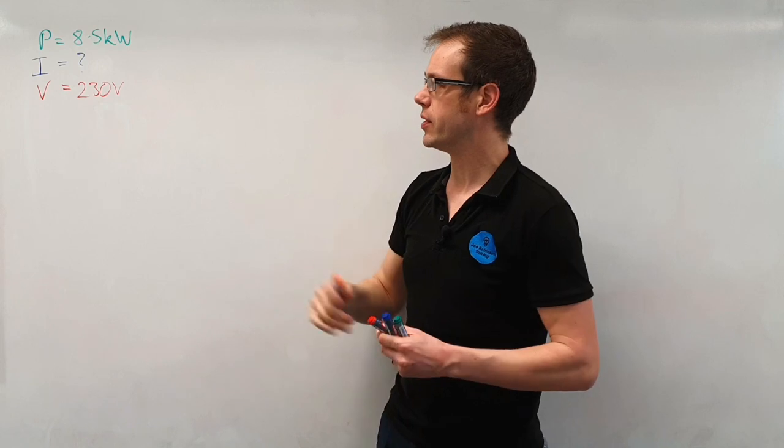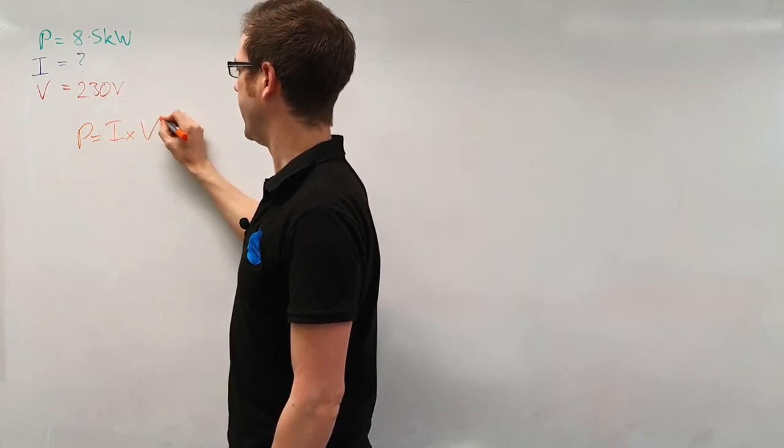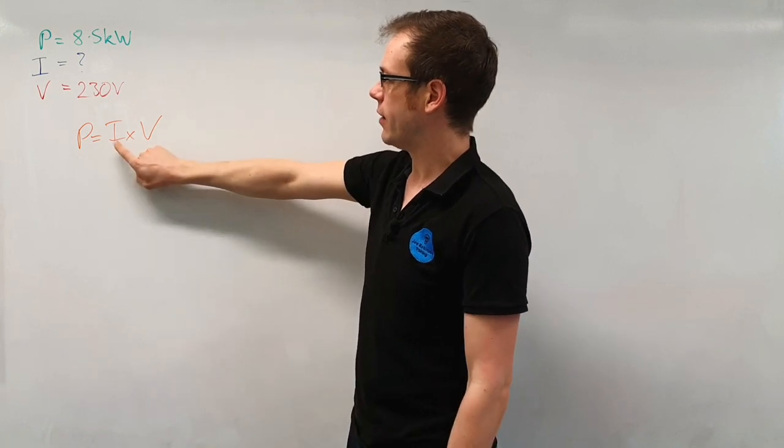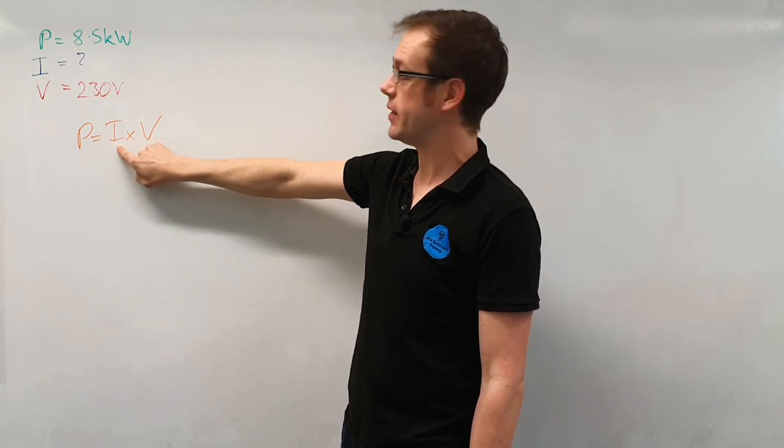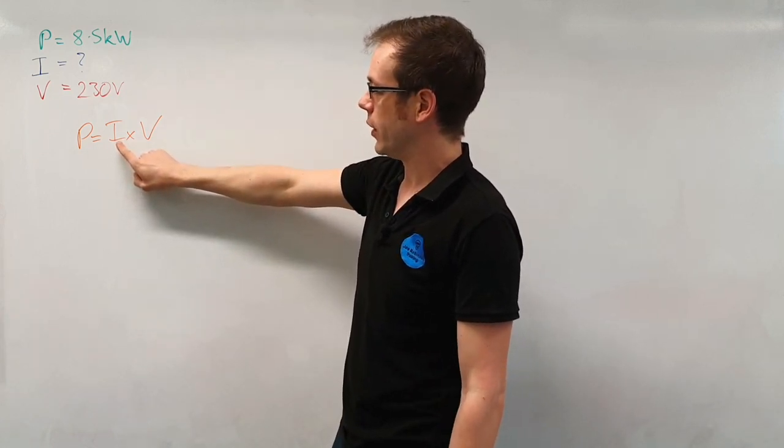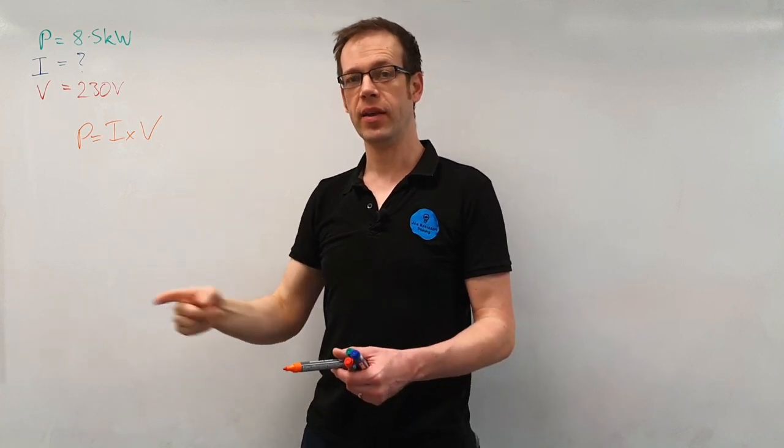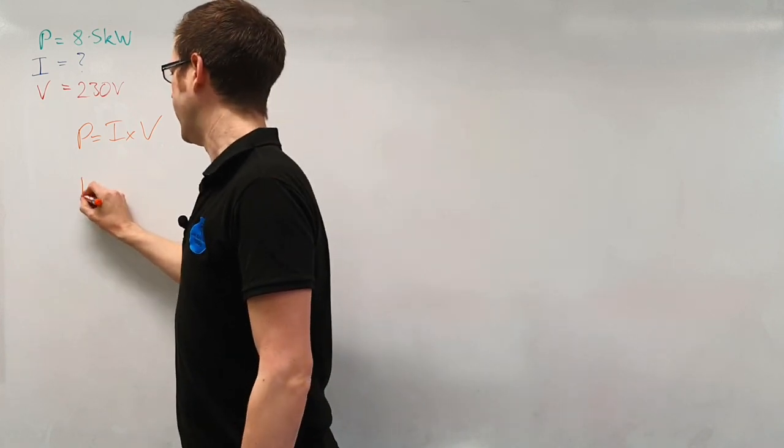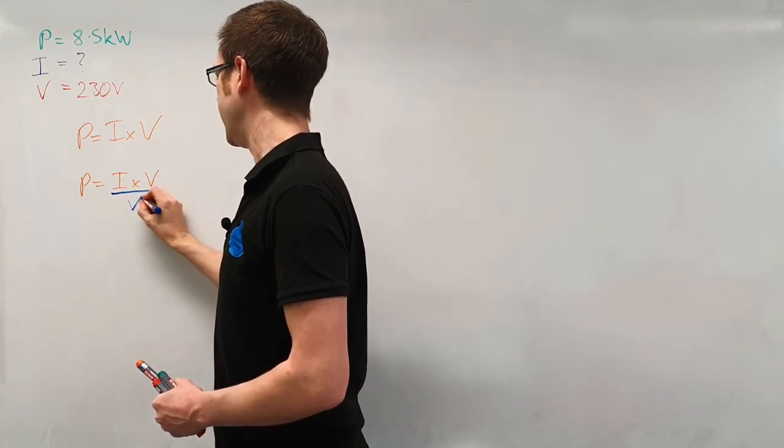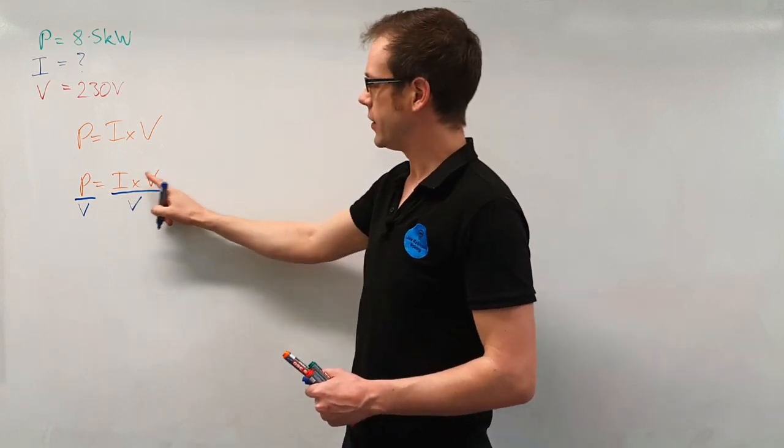So let's figure out how we're going to change this formula around to find the current. We start off from our formula P is equal to I times by V, we want to make I the subject. Now generally speaking when I do transposition I think if I want to get this by itself I need to figure out what I'm doing to that and then do the opposite. This is an easy one because there's only one stage. At the minute we are taking I and we are timesing it by V, so what is the opposite of timesing by V? Well the opposite is to divide by V. So P is equal to I times V and then we're going to do the opposite function which is to divide by V. When we do something to one side we have to do it to the other in order to keep the truth of this equal statement in place.